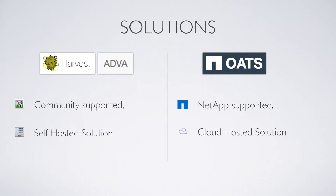Harvest and ADVA are self-hosted — you put that in your own infrastructure. It's a Pearl daemon, or a virtual appliance. Oats will be NetApp-supported; it's incubating right now. What's interesting about Oats is it's going to be integrated with the cloud — there'll be stuff running on-prem at the customer to collect the metrics, pushing that to Amazon instances, and both NetApp support and the customer would have access to it.